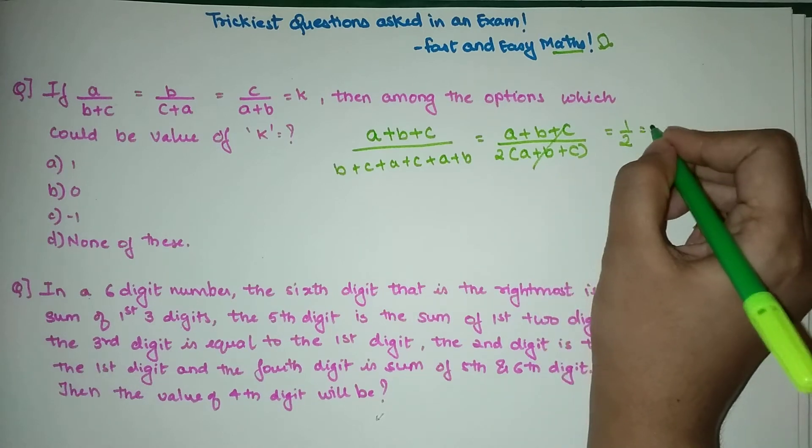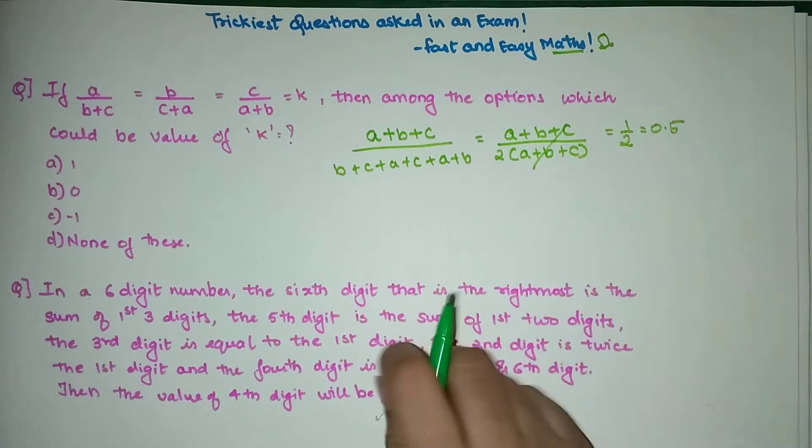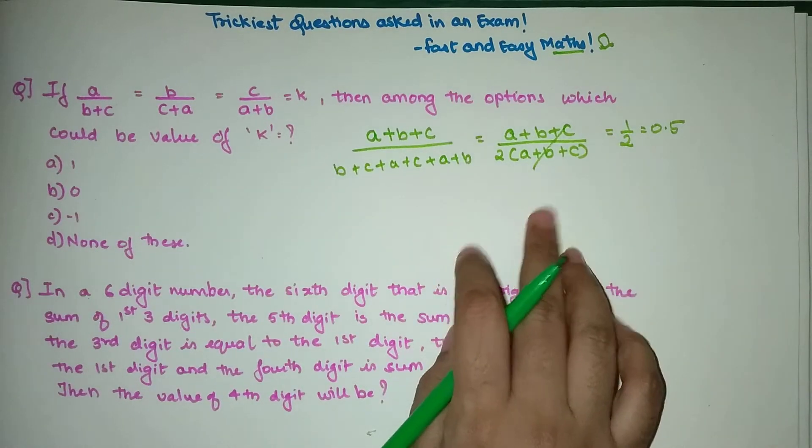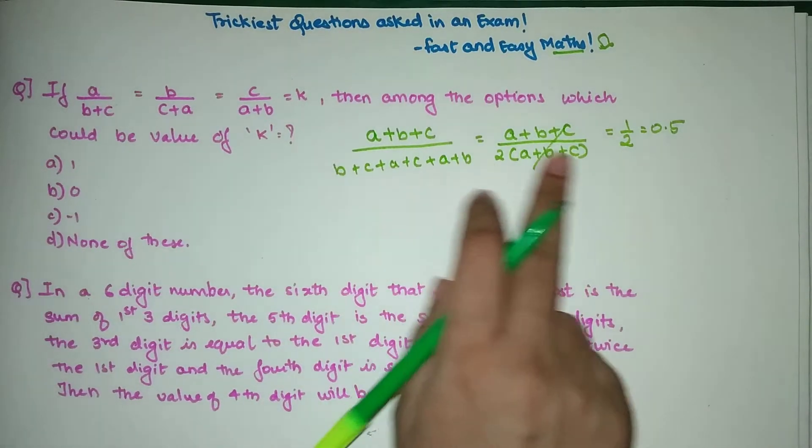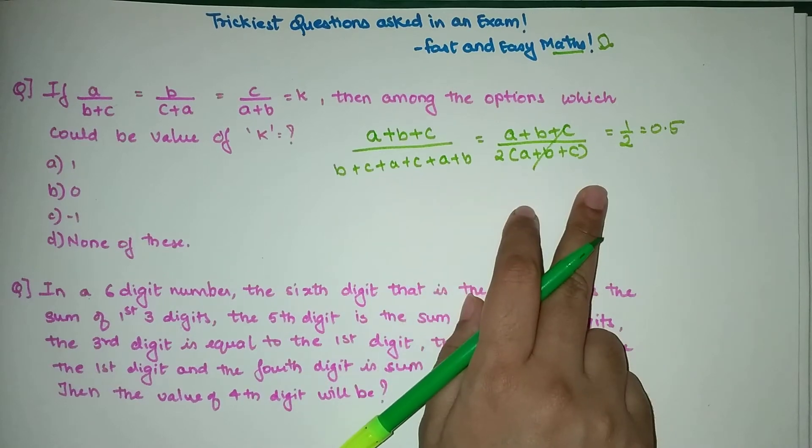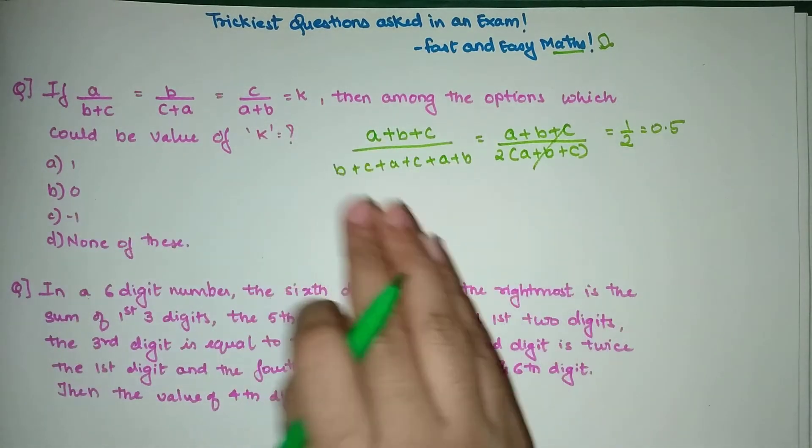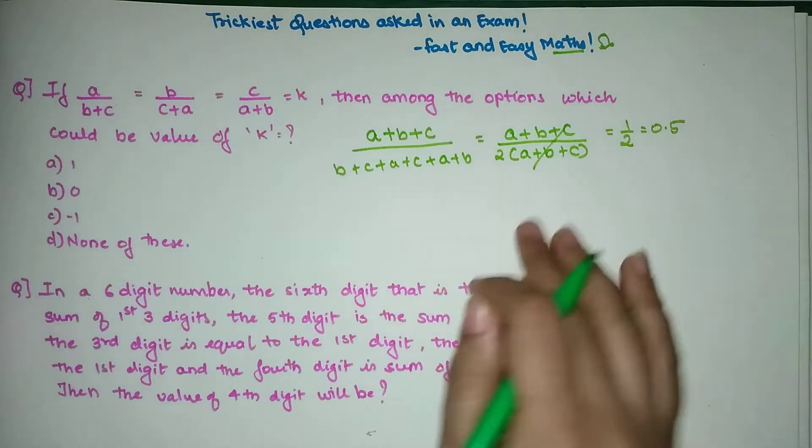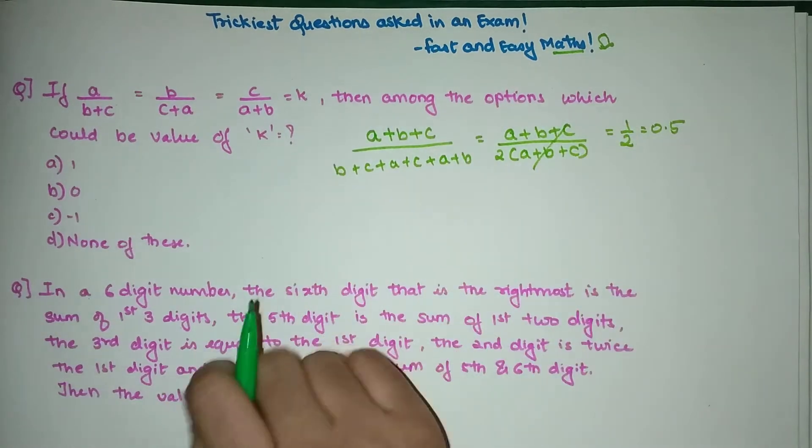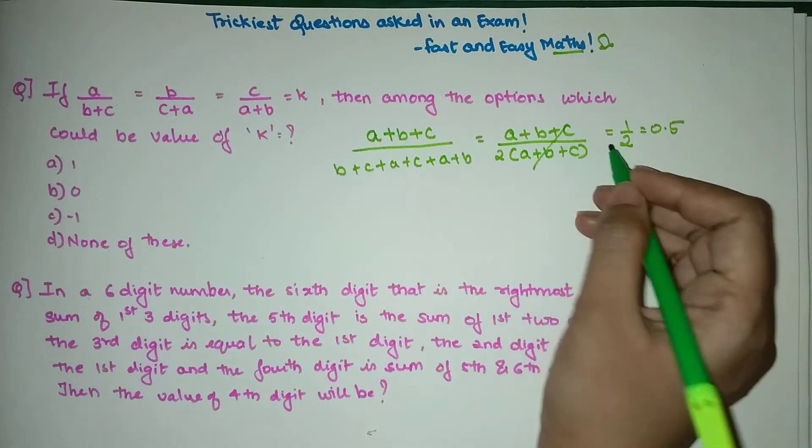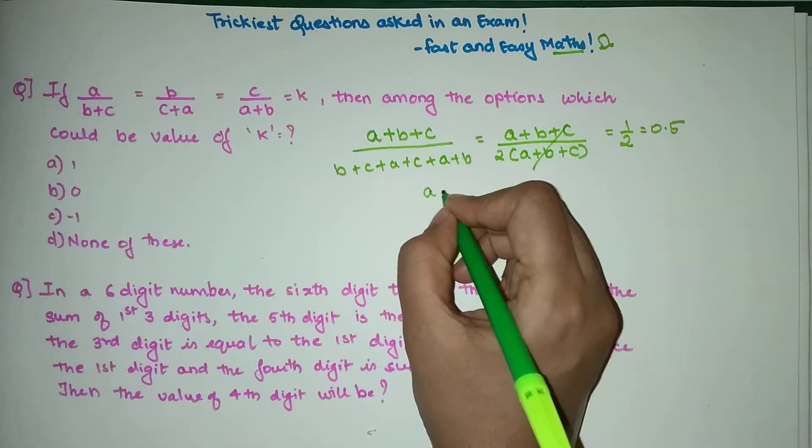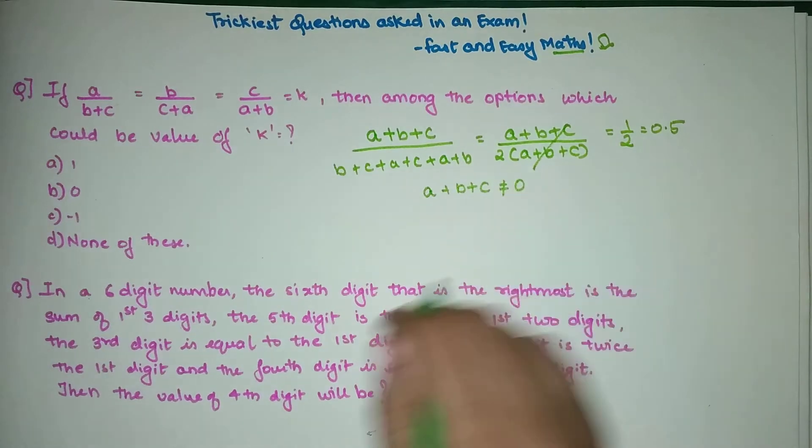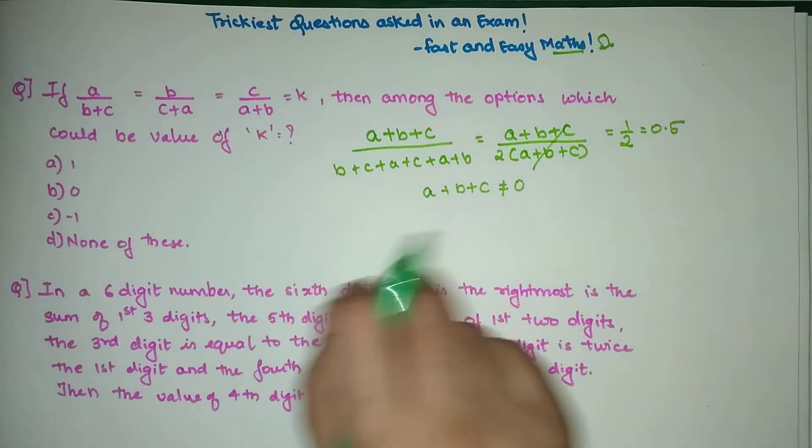Do you know why you could cancel (A+B+C)/(A+B+C)? There is a very simple basic mathematic concept which everybody knows, but in this question most students forgot to apply. A+B+C can be cancelled only if it is not equal to 0.